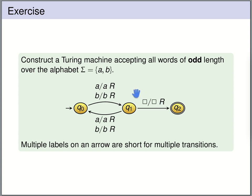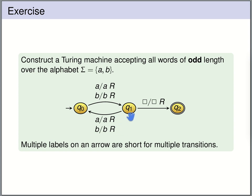We write multiple labels along an arrow as a shorthand for multiple transitions. The two labels on the arrow from q0 to q1 are shorthand for two separate transitions, and likewise for the labels from q1 to q0.